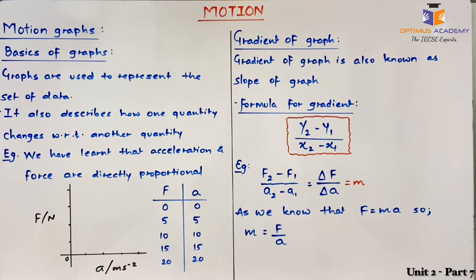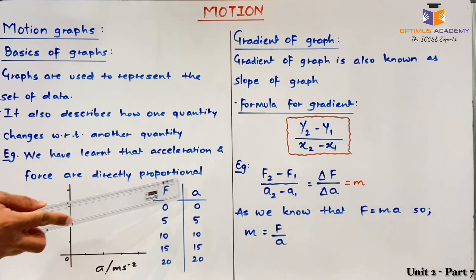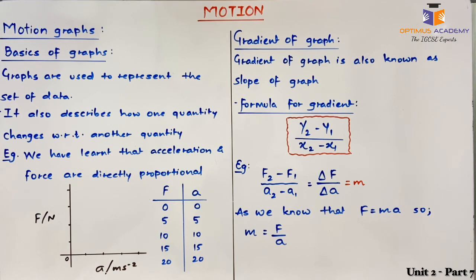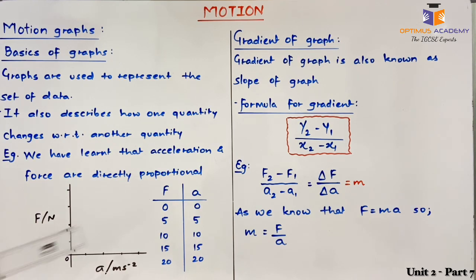Most of the time it is explicitly given in your paper which quantity to represent on the y-axis and which on the x-axis. But if it is not given, you should select the independent quantity for the x-axis. For example, if you have a table for distance and time, time being the independent quantity goes on the x-axis and distance on the y-axis. In this case, force and acceleration are both dependent on each other, so it does not matter which goes on which axis.